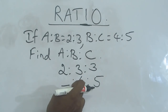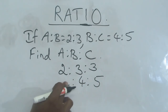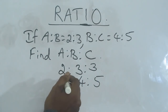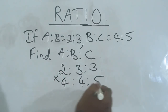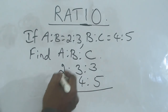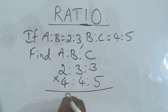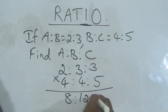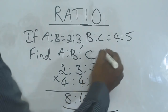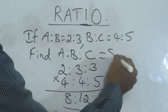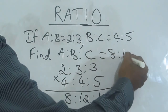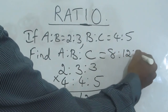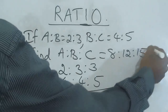So just suffix 3, or just add 3 at the end. Second line starts with 4, so just you prefix 4. Just after that, just multiply. 2 fours are 8, 3 fours are 12, 3 fives are 15. So A is to B is to C is 8 is to 12 is to 15.